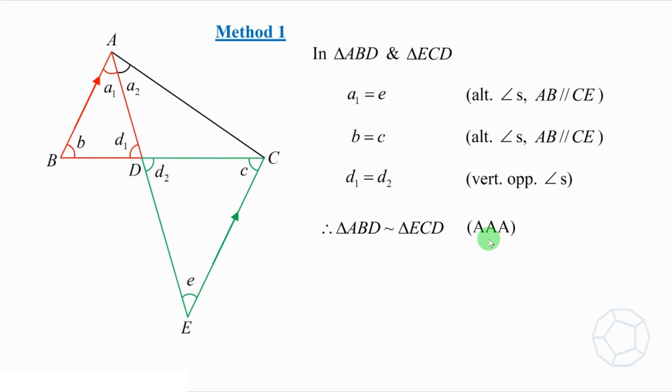The reason is AAA as expected. Now, we'll have two pairs of corresponding sides. AB and EC as a pair. DB and DC is another pair. The ratios are equal. We're going to compare this result with the angle bisector theorem.